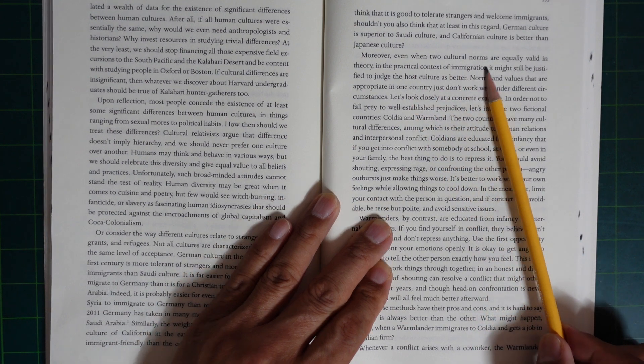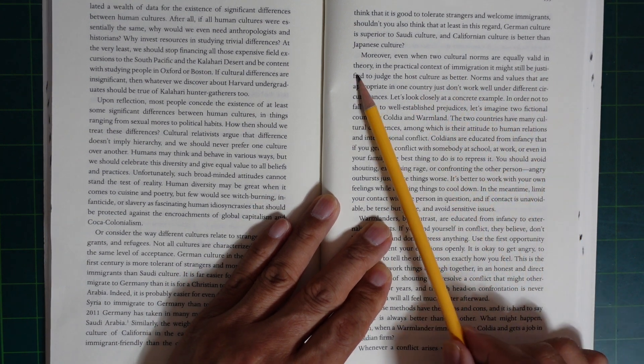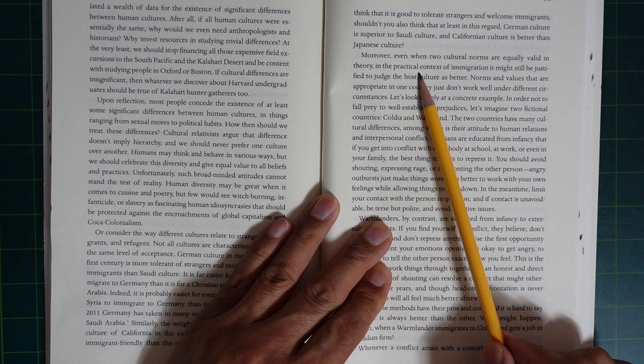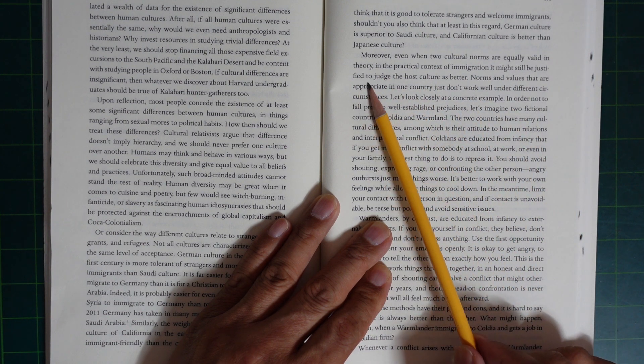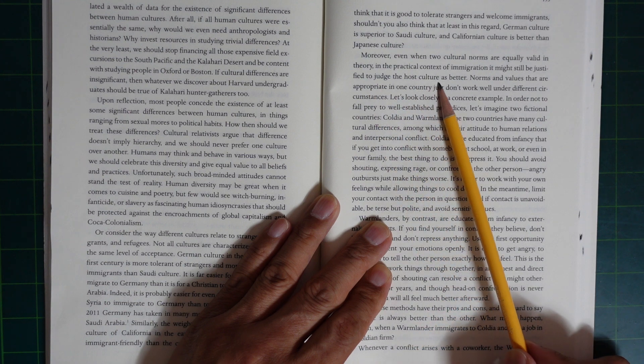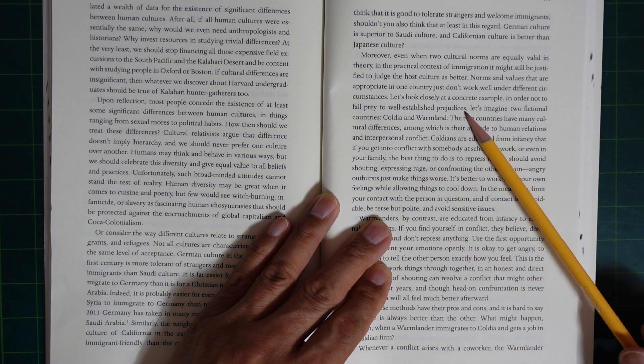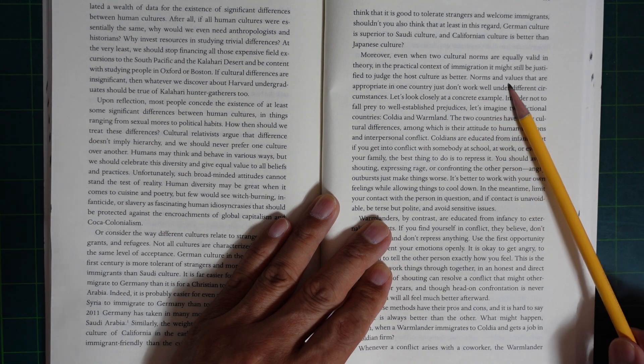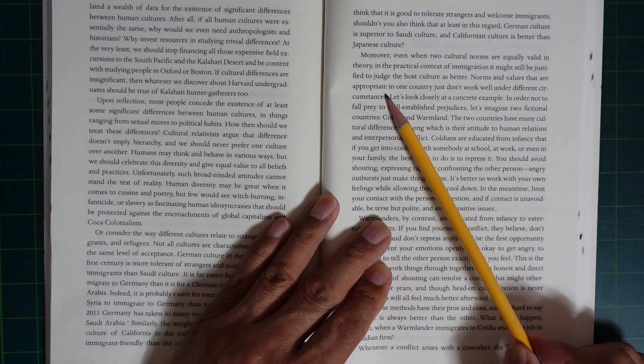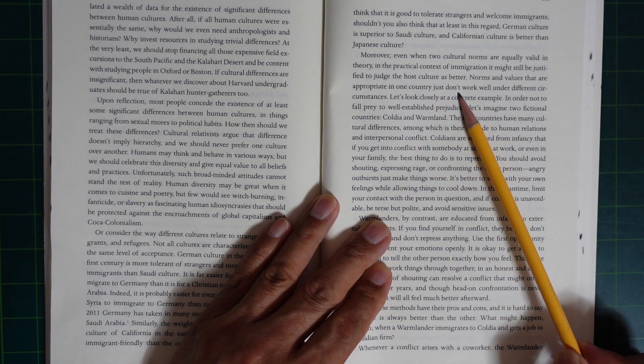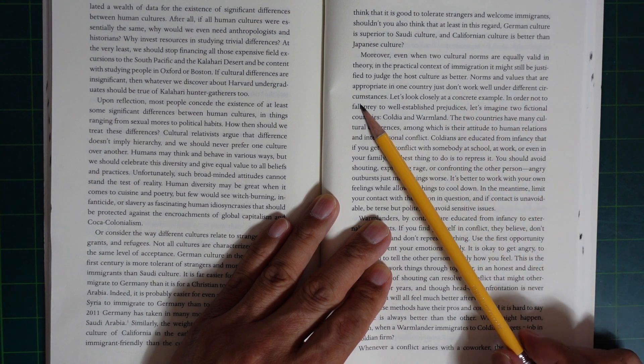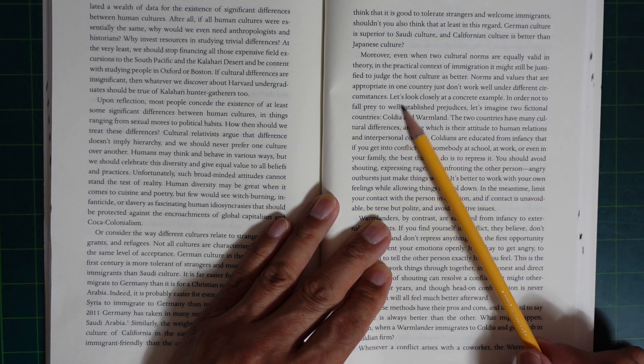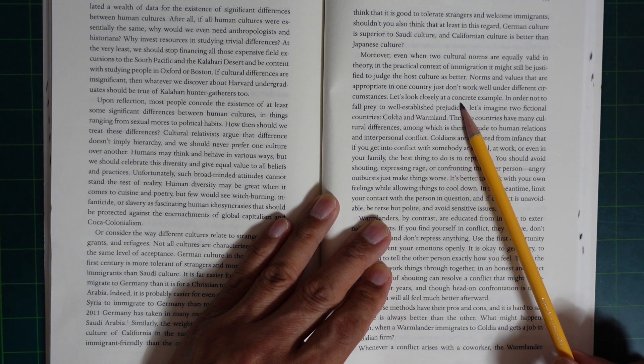Moreover, even when two cultural norms are equally valid in theory, the practical context of immigration might still justify judging the host culture as better. Norms and values that are appropriate in one culture just don't work well under different circumstances. Let's look closely at a concrete example.